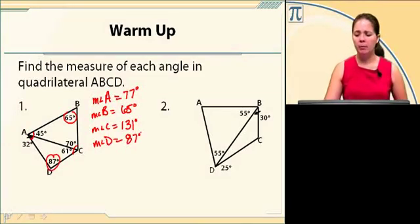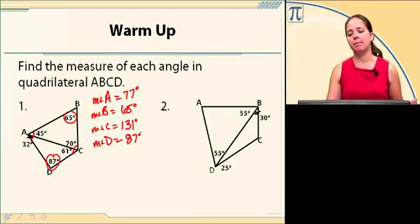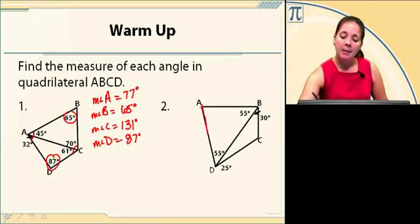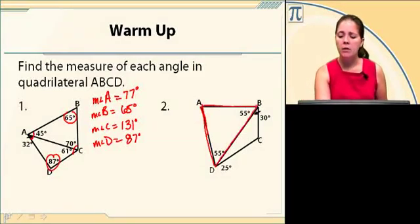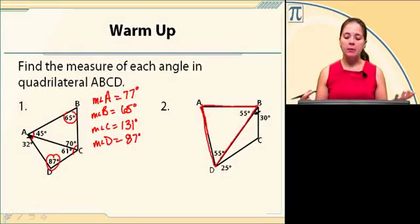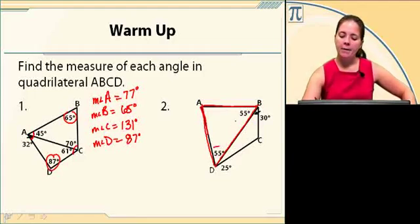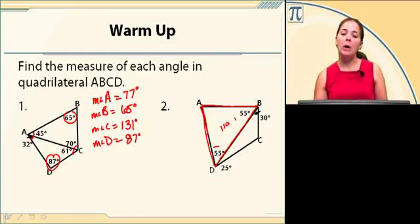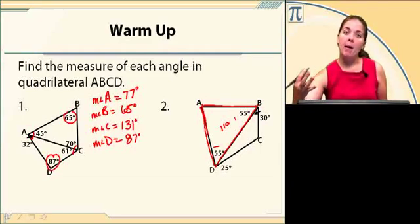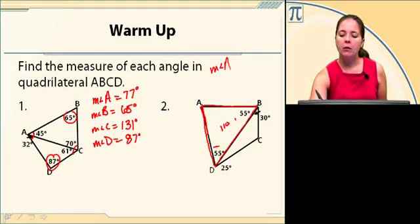Now let's work with number 2. I can see that ABD is a triangle, and in a triangle, the sum of the interior angles is 180 degrees. Since I have 55 and 55, I have a total of 110, and I need 180, so 180 minus 110 would make the measure of angle A equal to 70 degrees.